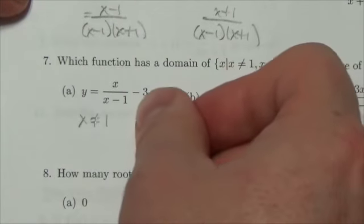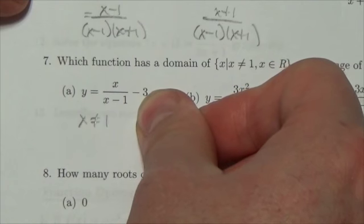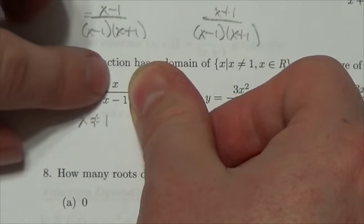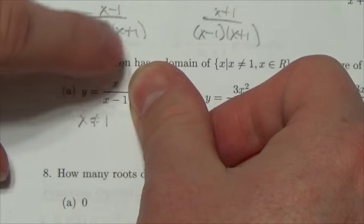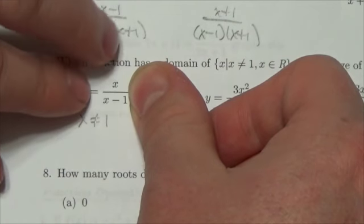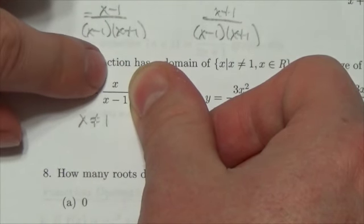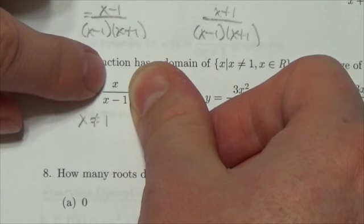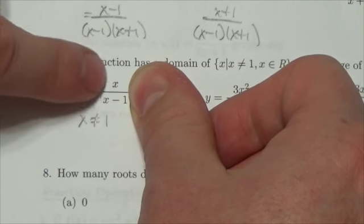Now, ignoring the minus 3, because I know that the minus 3 represents a vertical translation 3 units down. Just look at the function here, this rational function, the degree of 1, the degree of 1. Meaning that the horizontal asymptote here will be the ratio of the leading coefficients, so 1 over 1.